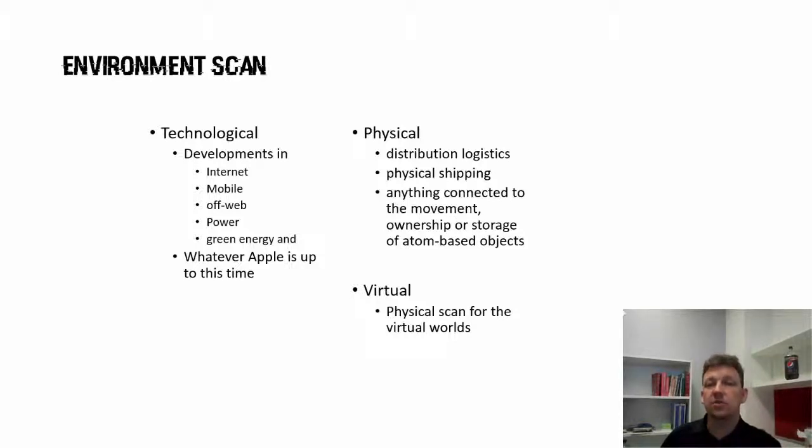Next up, physical, physicality, distribution, physical shipping, anything about movement, and that includes fuel prices, that includes the general economy. It also includes a whole bunch of things like the political. Are retailers lobbying for barriers to be put onto internet-assisted physical commerce? These are things you want to be mindful of and be looking for.